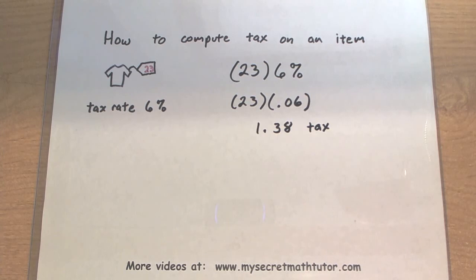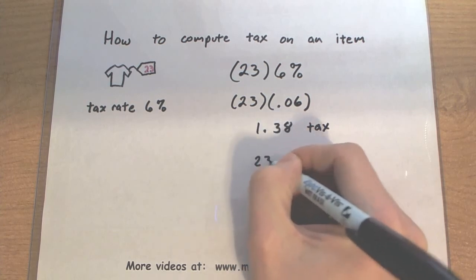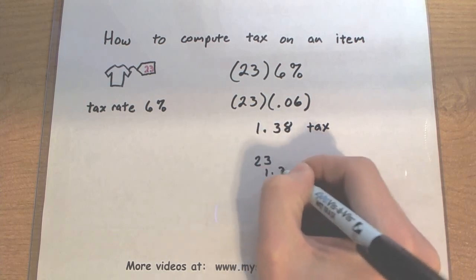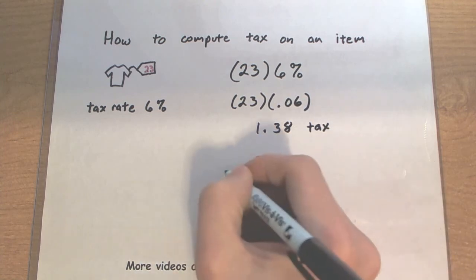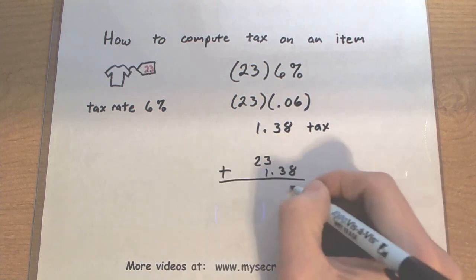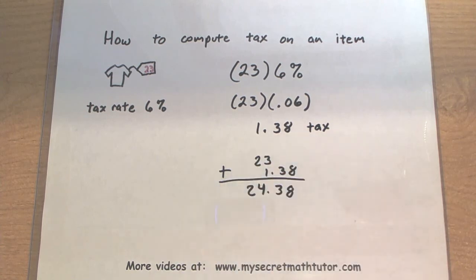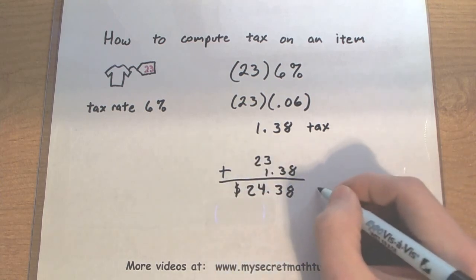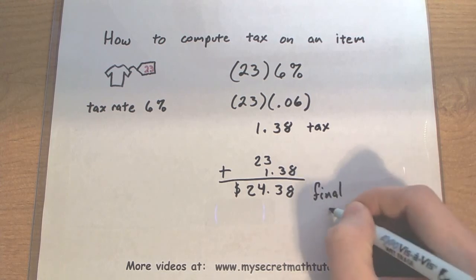If I did want to figure out my final price with everything added together, I would take the price of the shirt and add to it the tax. So $24.38 — that would be what I pay at the cash register. It includes the price of the shirt and the tax.